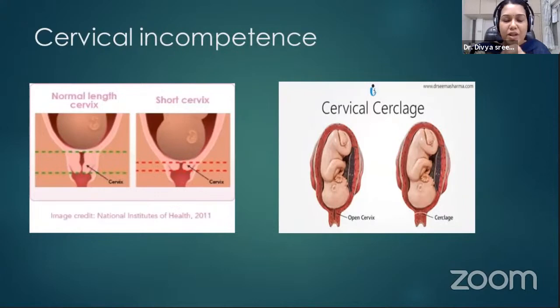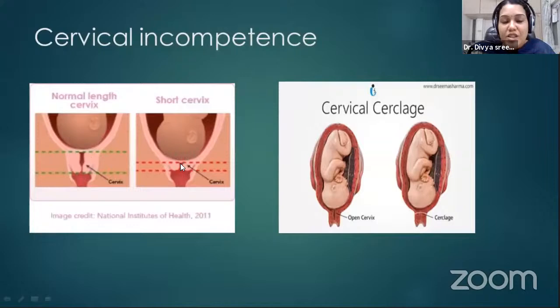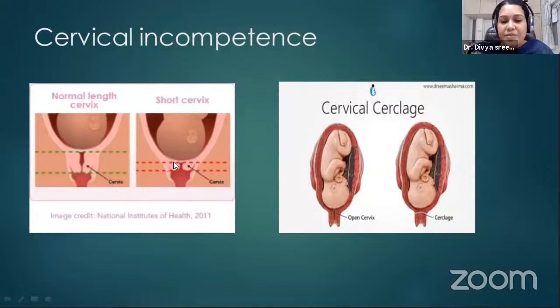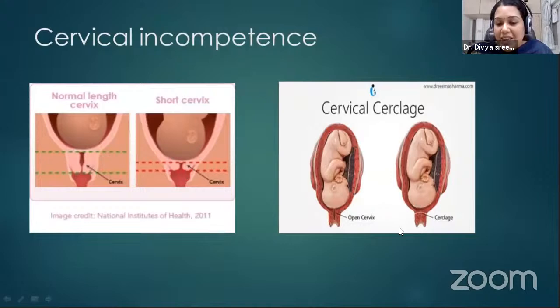Cervical incompetence means the cervix is not capable of holding the baby tightly. On ultrasound of a pregnant lady, cervical length is measured — a normal cervical length is 2.5 cm. If reduced, there is more chance of cervical opening and abortion, typically seen in the second trimester. If a lady has had an abortion due to cervical incompetence, in the next pregnancy before 10 to 12 weeks, she will be advised cervical cerclage — a procedure to tighten and keep the cervix in position.